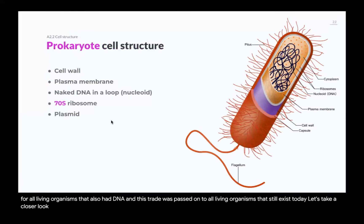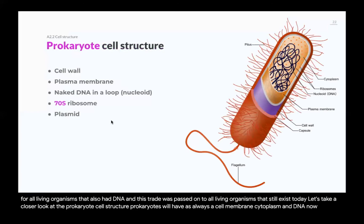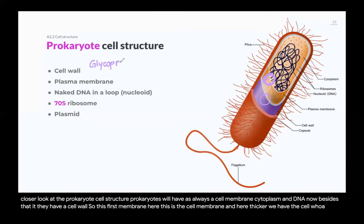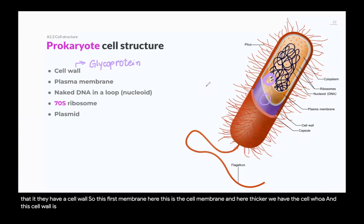Let's take a closer look at prokaryote cell structure. Prokaryotes have a cell membrane, cytoplasm, and DNA. Besides that, they have a cell wall — the inner layer is the cell membrane, and the thicker outer layer is the cell wall, which is made of peptidoglycan. This is different from eukaryotic cell walls.